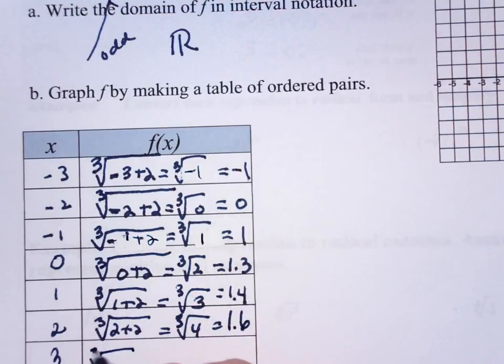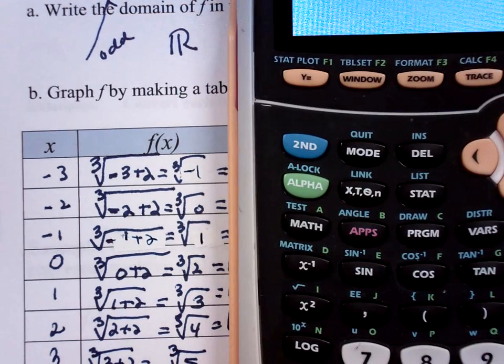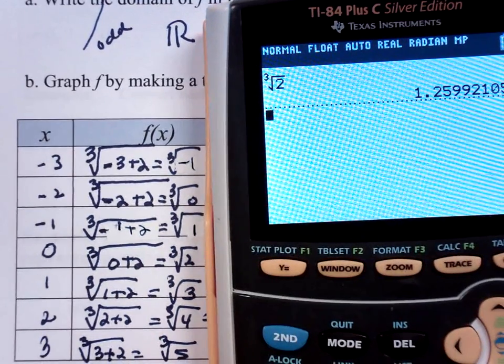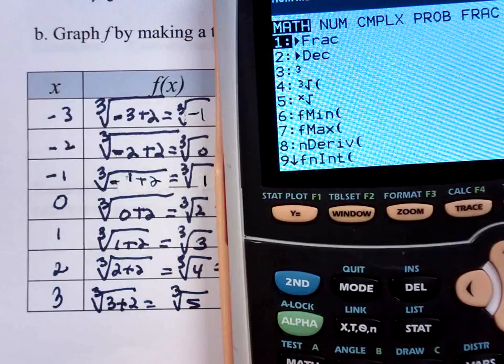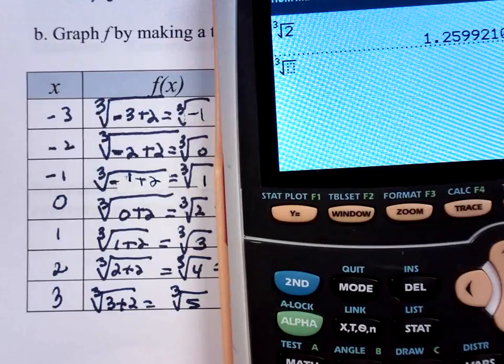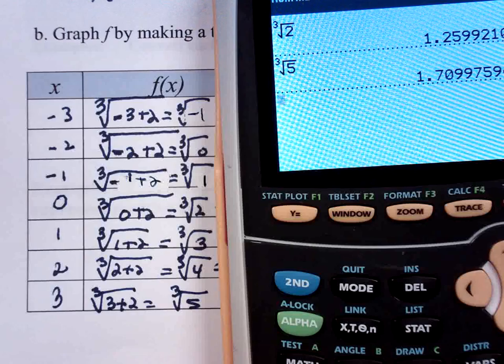And cube root of 3 plus 2, cube root of 5. And now let me move back to the grapher. For some of you. And it's math. Cube root is 4. And 5. 1.7.